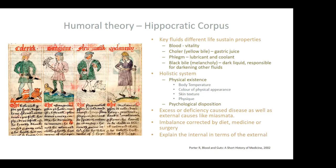It was an appealing system because it was quite holistic — it could account for physical existence such as body temperature, skin colour, physical appearance, as well as psychological disposition, and we still speak of people as being melancholy. Either an excess or deficiency in the humors was responsible for disease, which could be internal or external, caused by things like bad air or miasms. This imbalance could be corrected by diet and lifestyle, medicine, or surgery as a last resort, and it was helpful because it explained internal processes in terms of the external.